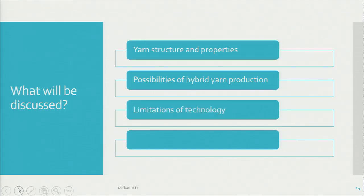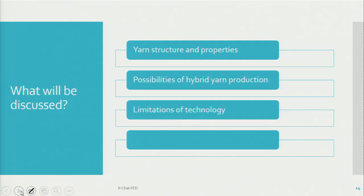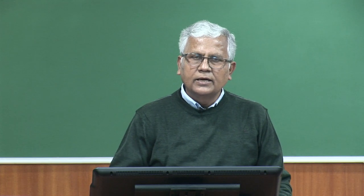The next topic is the limitations of these technologies. Each and every technology has certain limitations, and this will also be discussed. After that, we will finally go to the applications part — keeping in mind the properties of the yarn, what could be the possible applications, and which kind of product each yarn can find a place in.